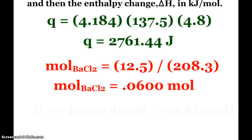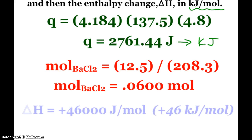So now to find the delta H in kilojoules per mole, I just have to first change this to kilojoules. So divide by 1000, 2.76144. Divide by my moles. And now I'll use my proper sig figs. I end up with a positive delta H because it's endothermic, 46,000 joules per mole. But as it said, in kilojoules per mole, that's 46 kilojoules per mole.